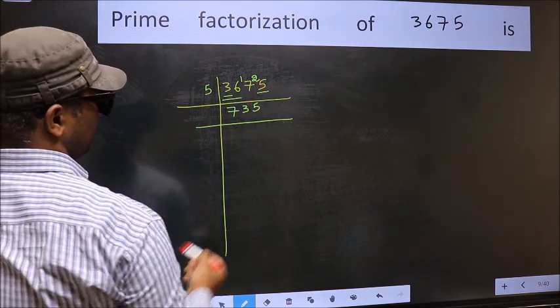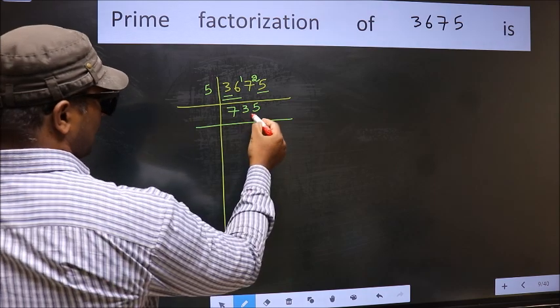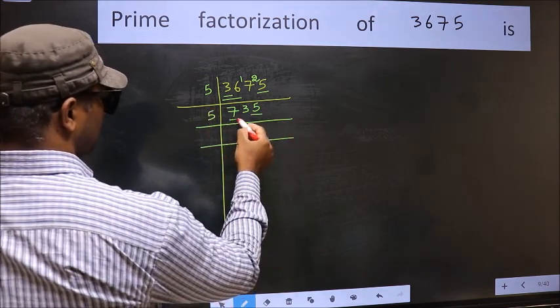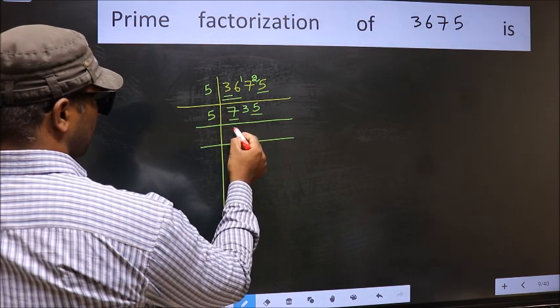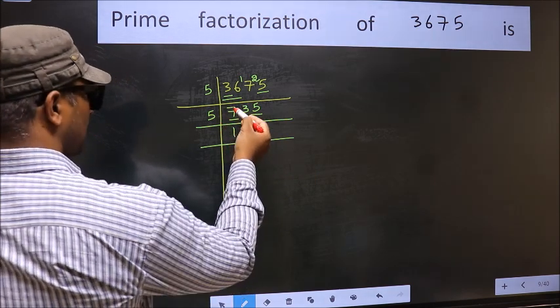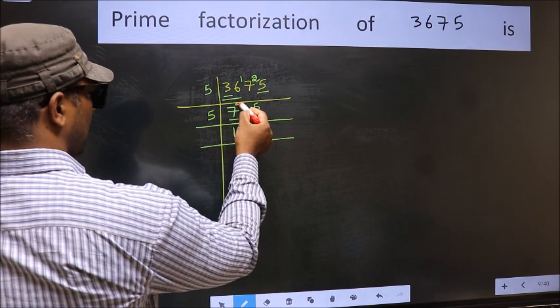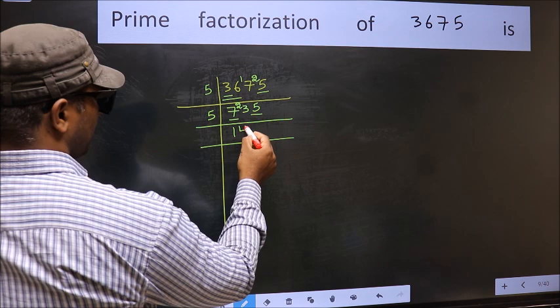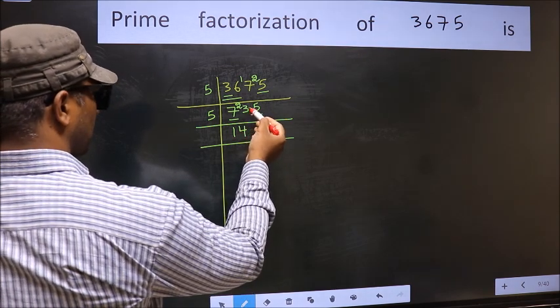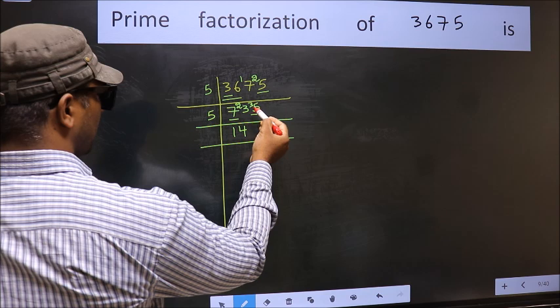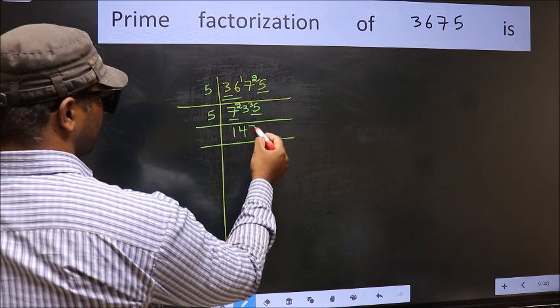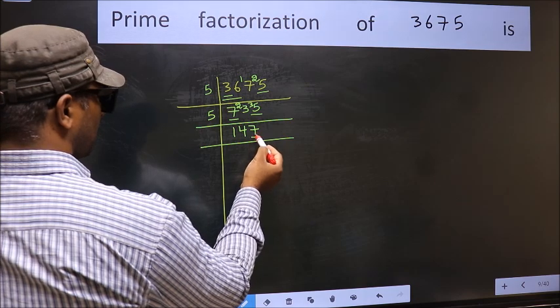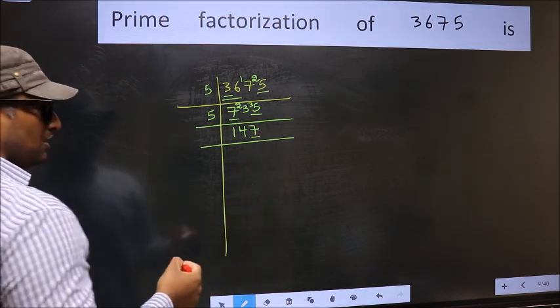5 times 5 is 25. Now the last digit 5 so take 5. First number 7. A number close to 7 in 5 table is 5 times 1, which is 5. 7 minus 5 is 2, 2 carried forward to 23. A number close to 23 in 5 table is 5 times 4, which is 20. 23 minus 20 is 3 carried forward to 35. When do we get 35 in 5 table? 5 times 7 is 35. Now the last digit 7, not even, so not divisible by 2.